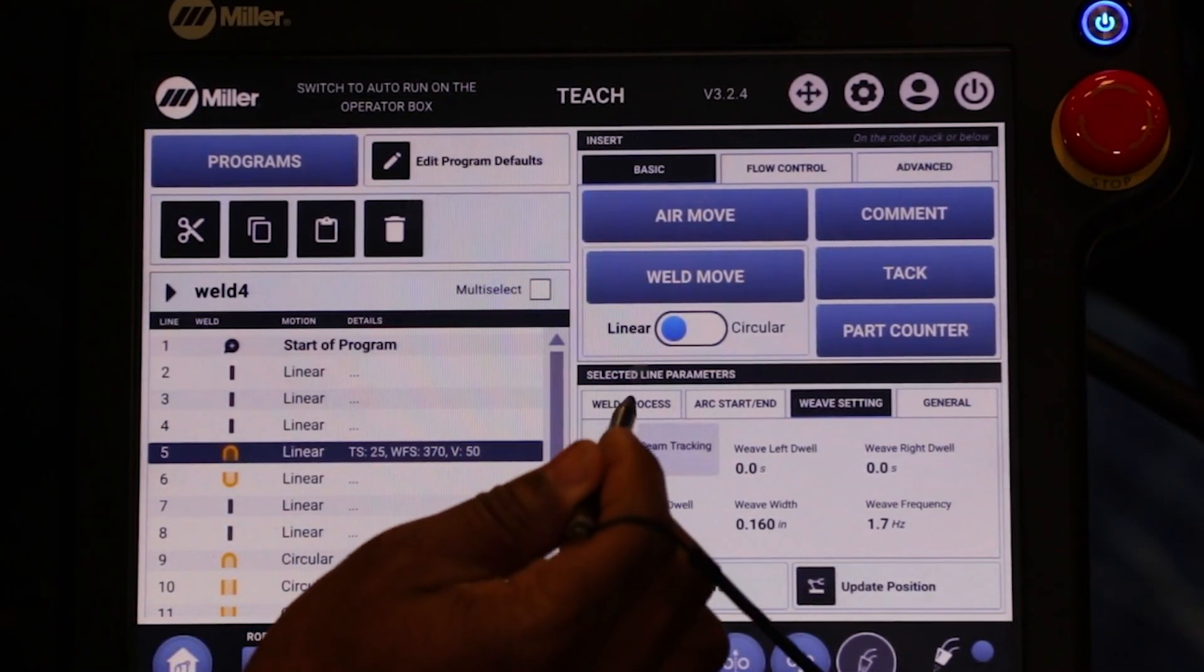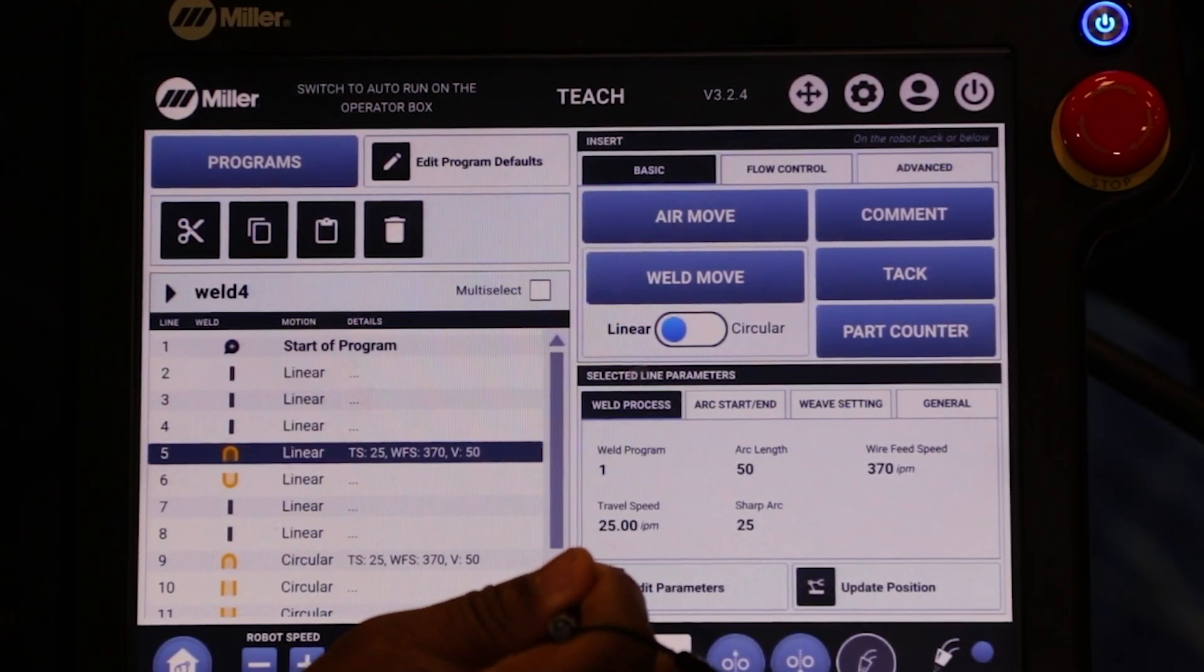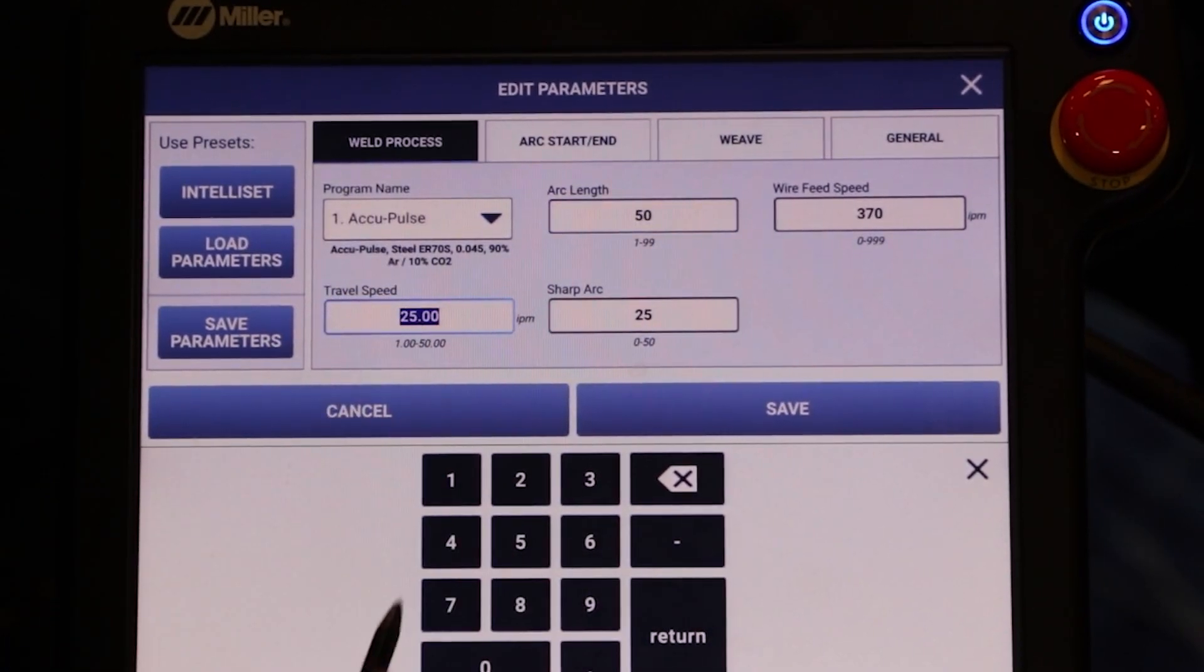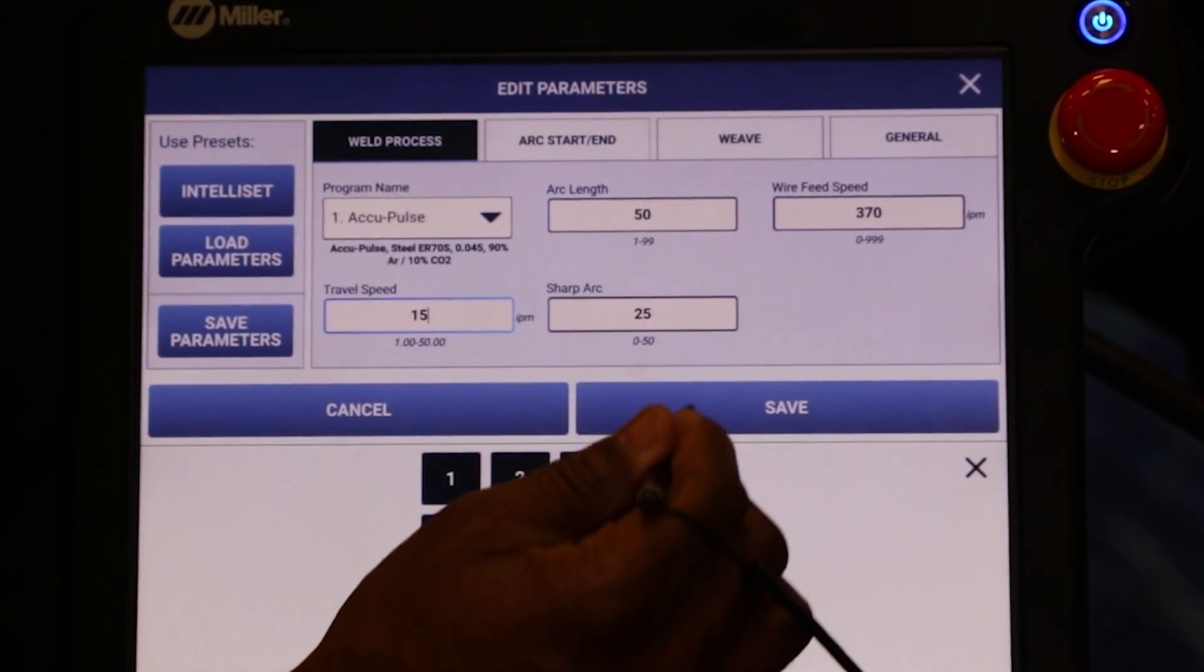Now what I may want to do is I'm traveling at 25, and with the weave I may want to take that down to 15.